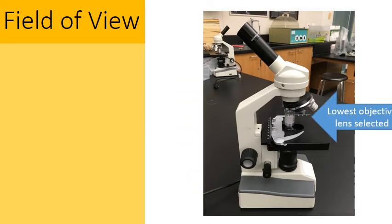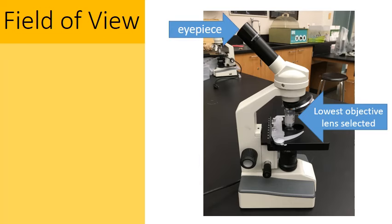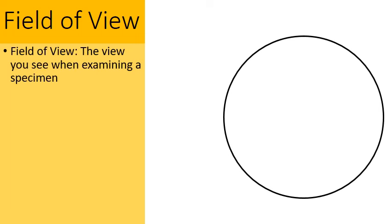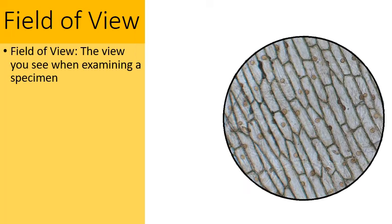Here's our microscope. We're going to select the lowest magnification possible, the lowest power objective lens, and look through the eyepiece. When we do, we're going to see a round view. This is what's called our field of view, the view that you can actually see when you're examining a specimen. Pretend we're looking at these cells right here, cells taken from an onion skin, an onion peel.